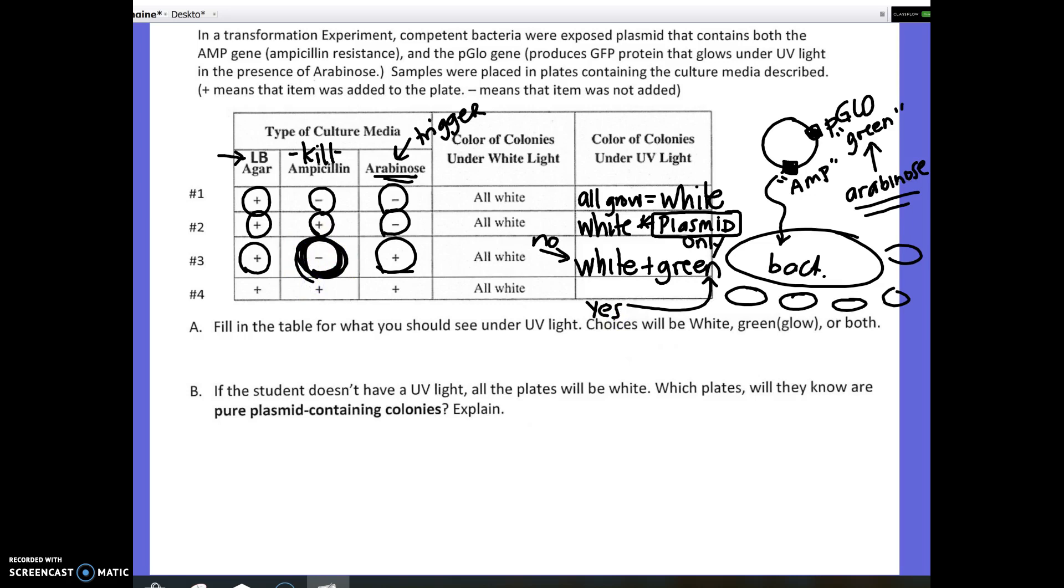In our last plate, we added both ampicillin and arabinose. Ampicillin kills bacteria without the plasmid. Arabinose triggers them to make the glowing protein. So, on this plate, we should only see green bacteria growing, because only those that picked up the plasmid are going to be growing. So, plate one, they'll all be white. Plate two, they'll all be white. Plate three, white and green will show up. And, on plate four, only green.